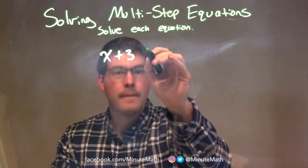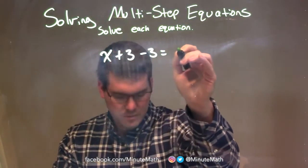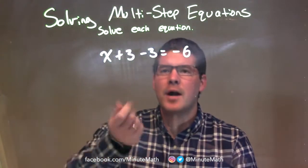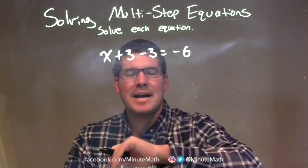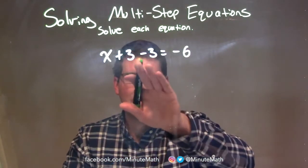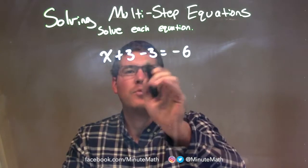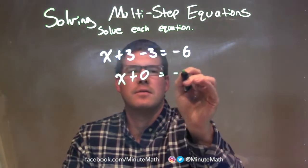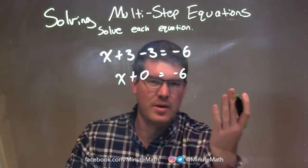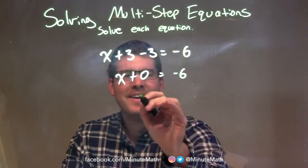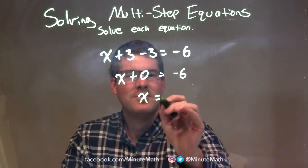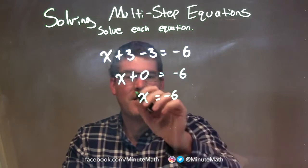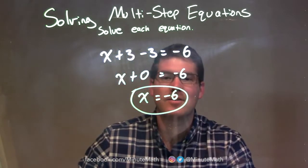x plus 3 minus 3 equals negative 6. I want to combine my like terms on each side. I have 3 minus 3 — those are my like terms, both numbers. So 3 minus 3 comes out to 0, so we have x plus 0. Well, x plus 0 is just x — 0 doesn't do anything. We bring down the negative 6. This one is actually fairly simple. The final answer here is just x equals negative 6.